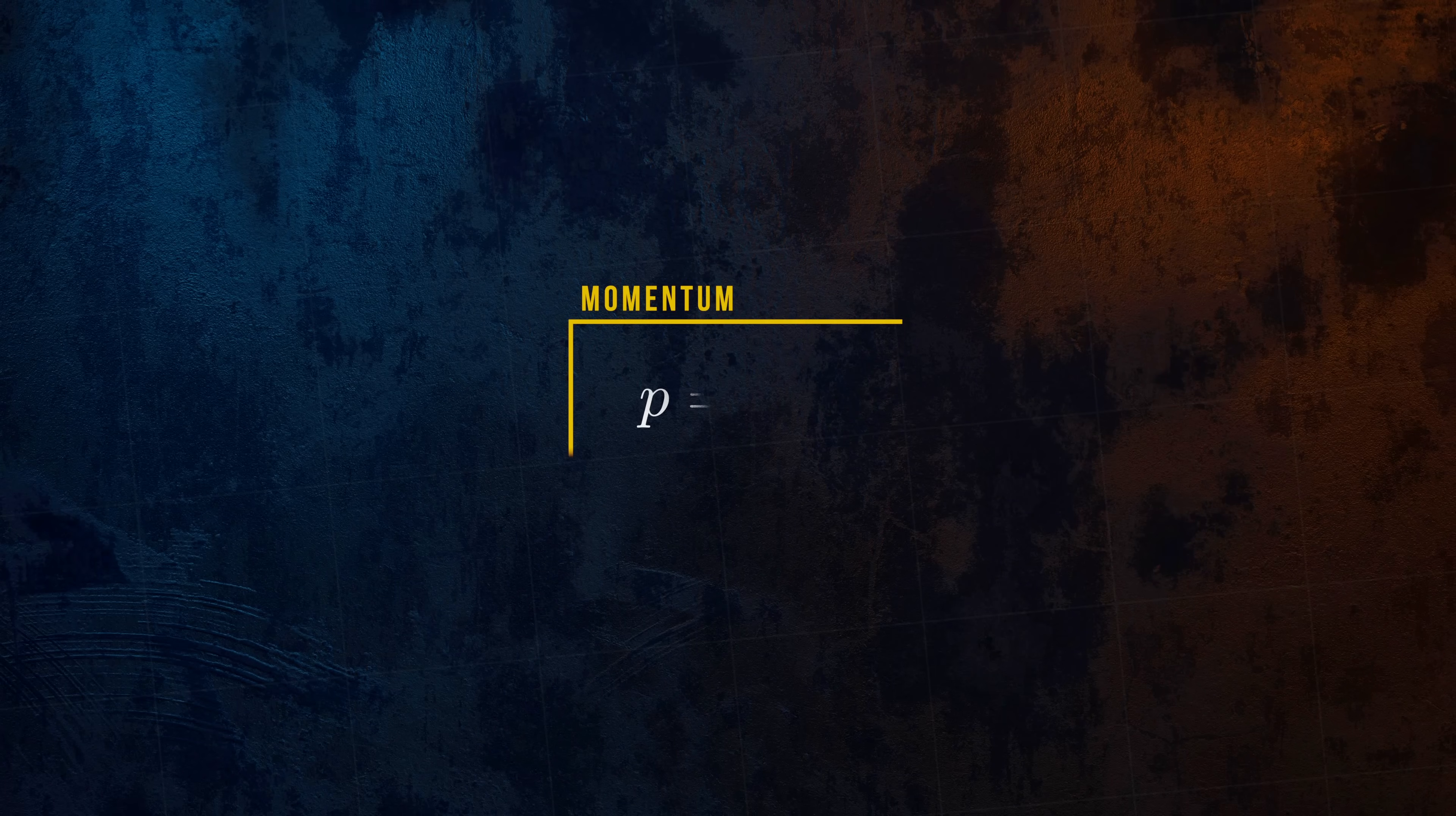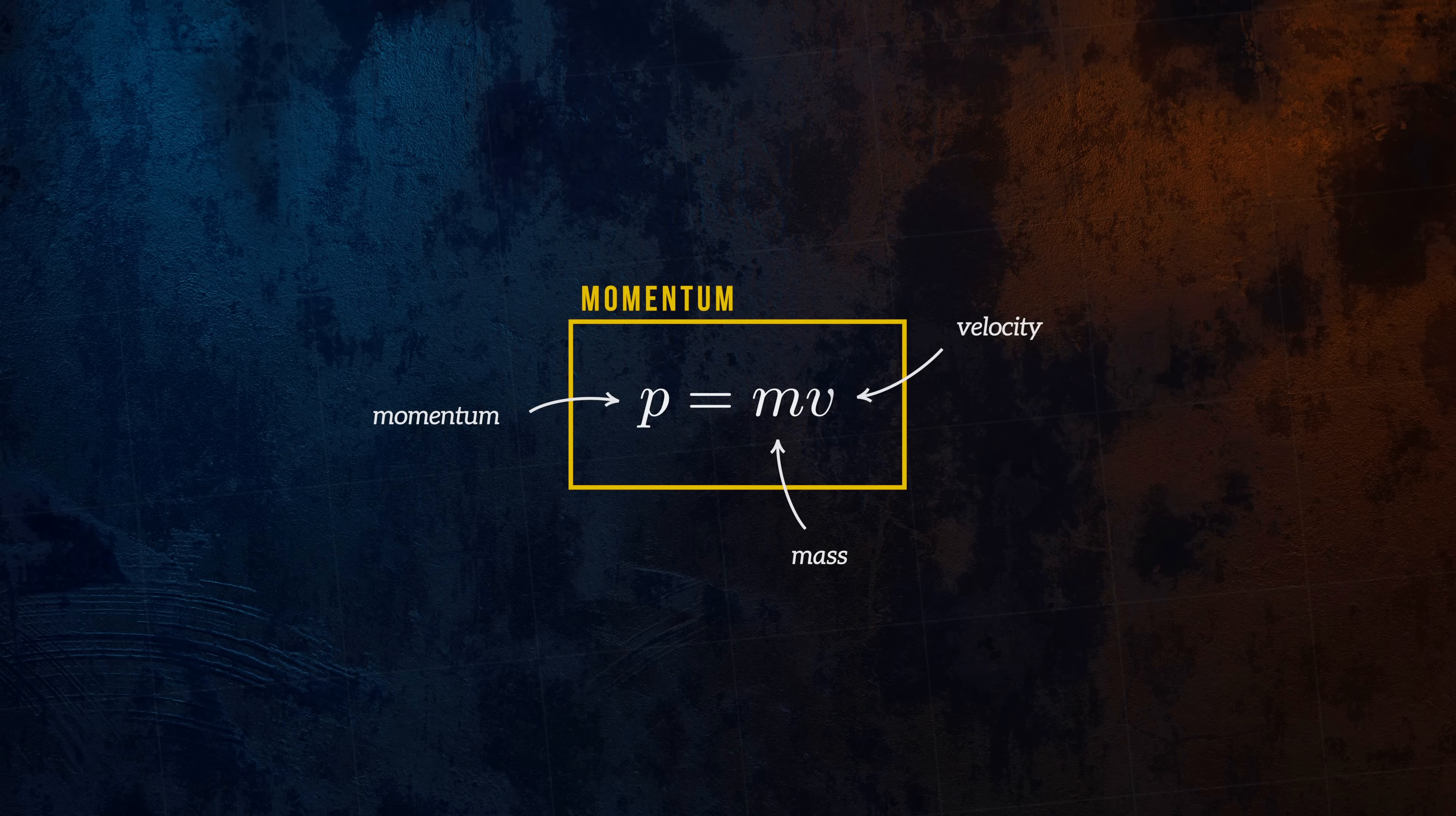Let's start with a definition. Denoted using the letter p, the momentum of an object is defined as the product of its mass and its velocity. Mass is measured in kilograms, and velocity is expressed in meters per second, so momentum has units of kilogram meters per second.